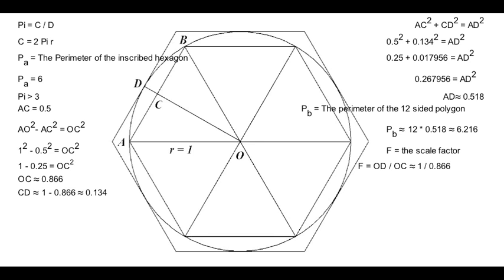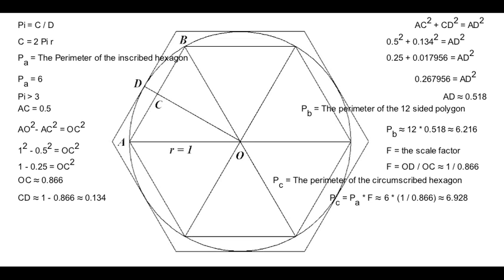We then take the scale factor and multiply it by the perimeter of the inscribed polygon, which was 6. This equation would be 6 times 1 over 0.866, which is approximately 6.928. You then repeat this method every time you figure out the perimeter of the new inscribed polygon, keeping in mind that you have to recalculate your scale factor every time you add more sides to your polygons, because the distance from the center of the polygon to the midpoint of one of the sides gets greater each time.